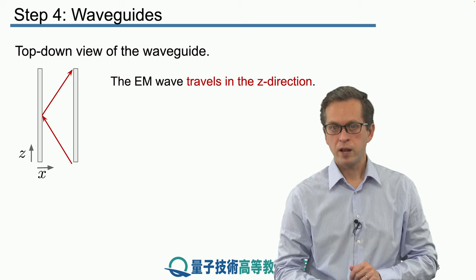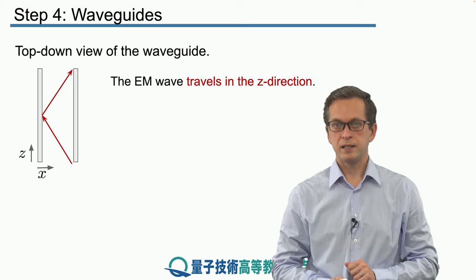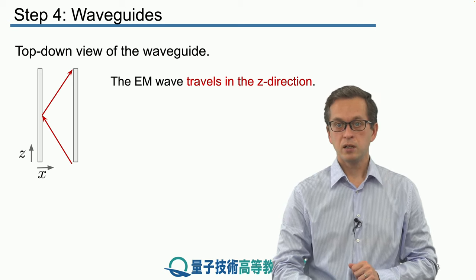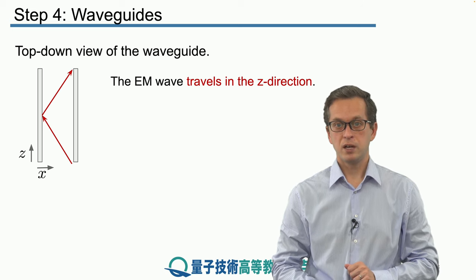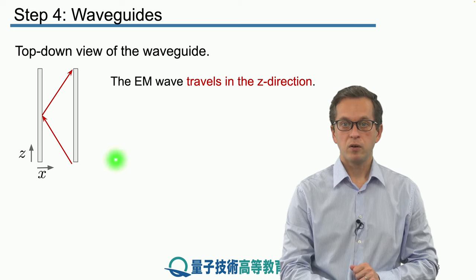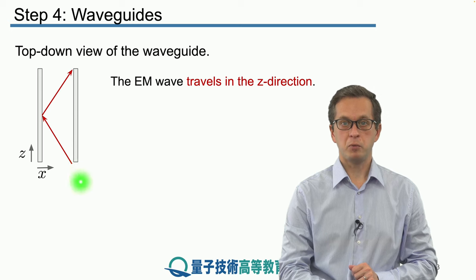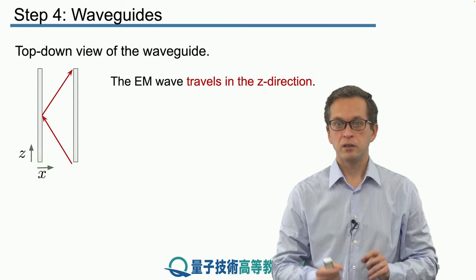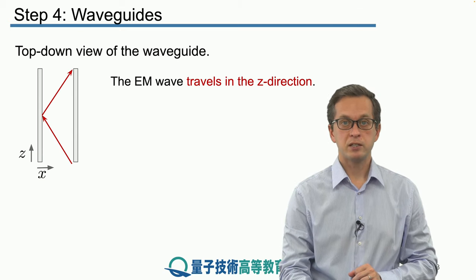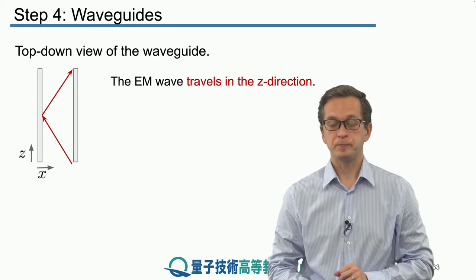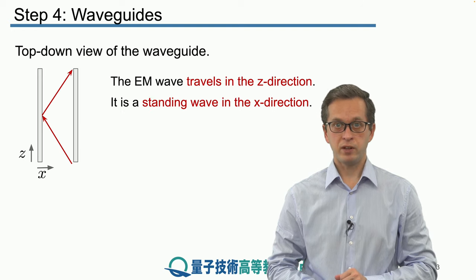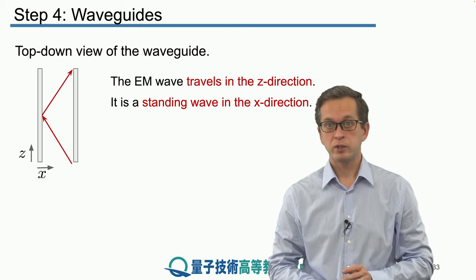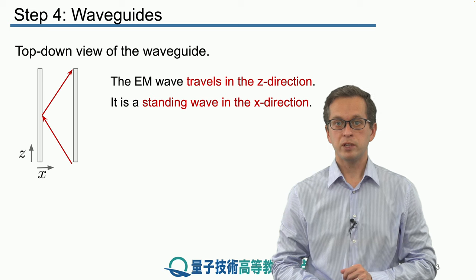So, our wave is not constrained in the z direction, meaning it's just a traveling wave in the z direction. However, by using the boundary conditions that we derived in the previous step, we know that in the x direction, the field must vanish at points x equals 0 and x equals a. In other words, we must have a standing wave in the x direction. How do we describe such a wave? We know that already.